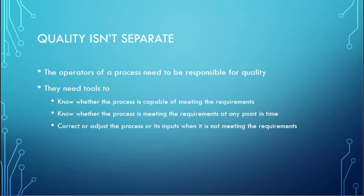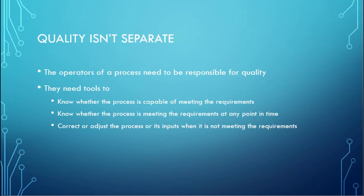A lot of organizations have a separate group that monitors quality, but that quality group is not responsible for quality — the people who are executing the process need to be responsible for its quality. As engineers, we need to own the process we're using to produce our product and be responsible for the quality of that process and what it produces. That means we need tools that tell us whether the process is capable of meeting requirements, whether it is currently meeting requirements, and how to correct or adjust the process when it is not.